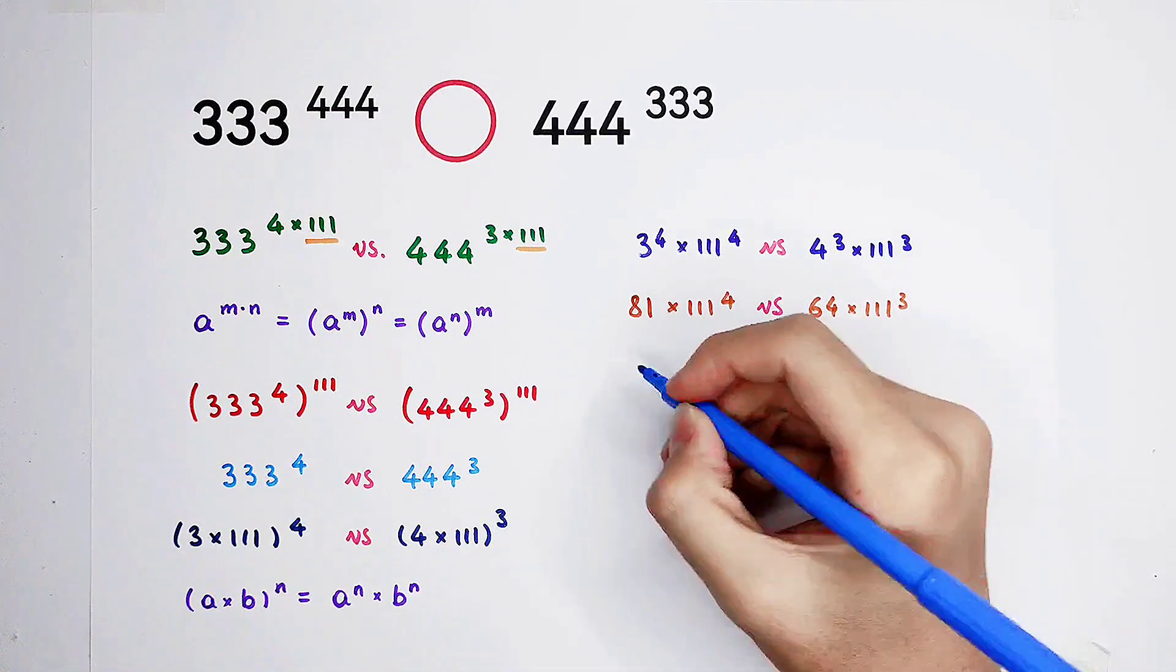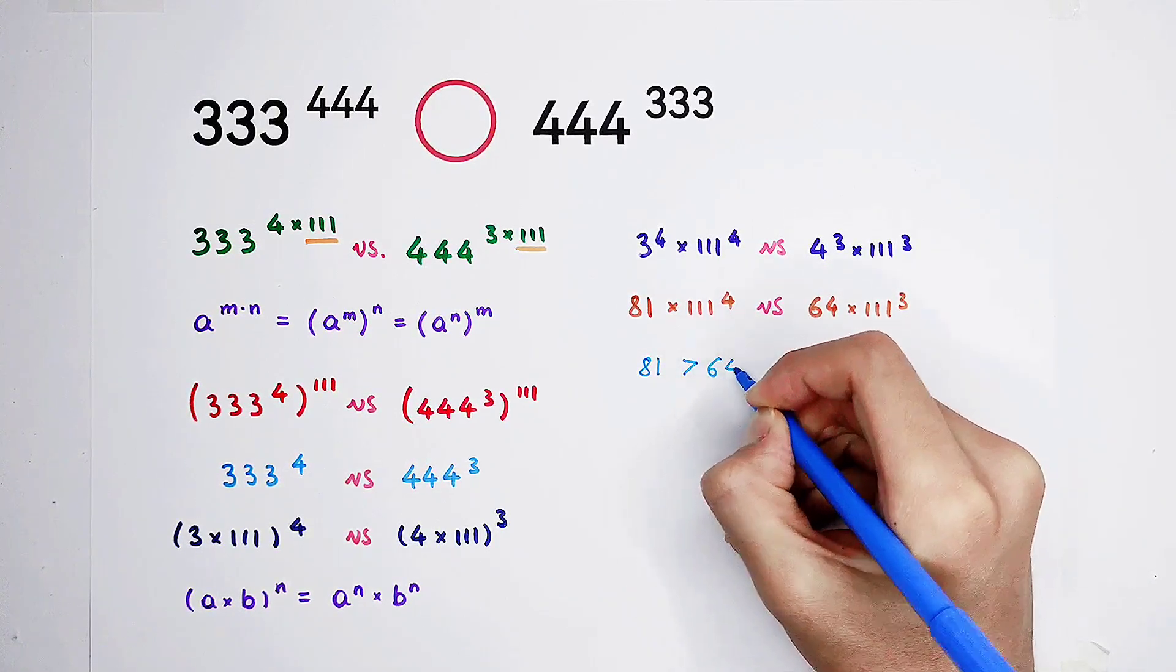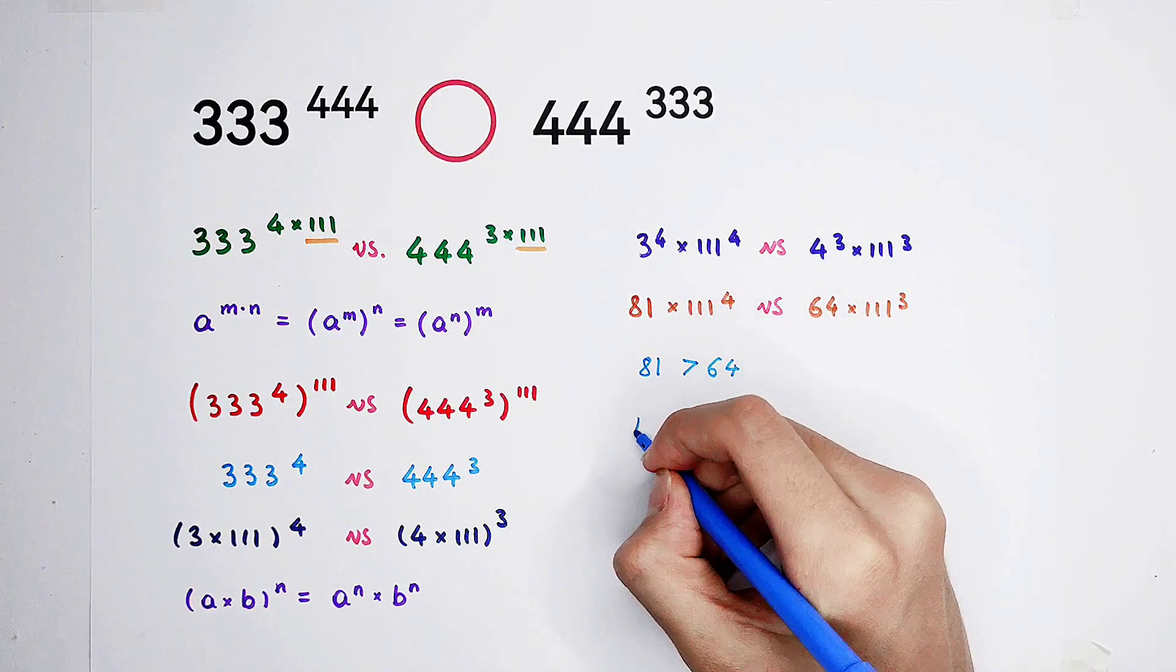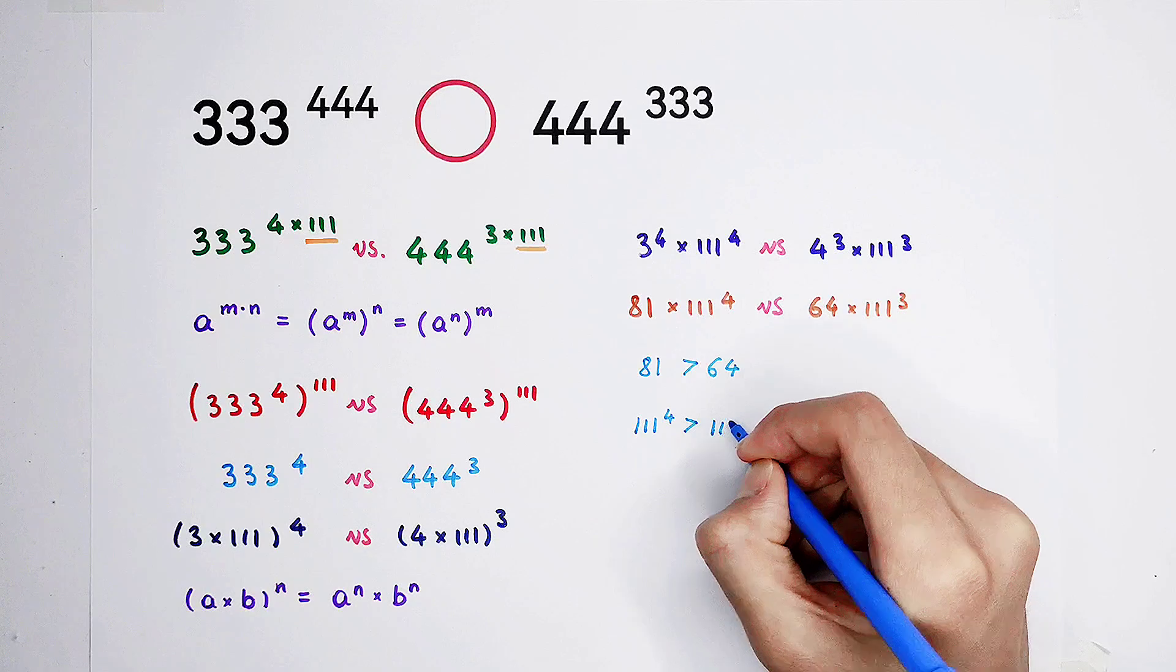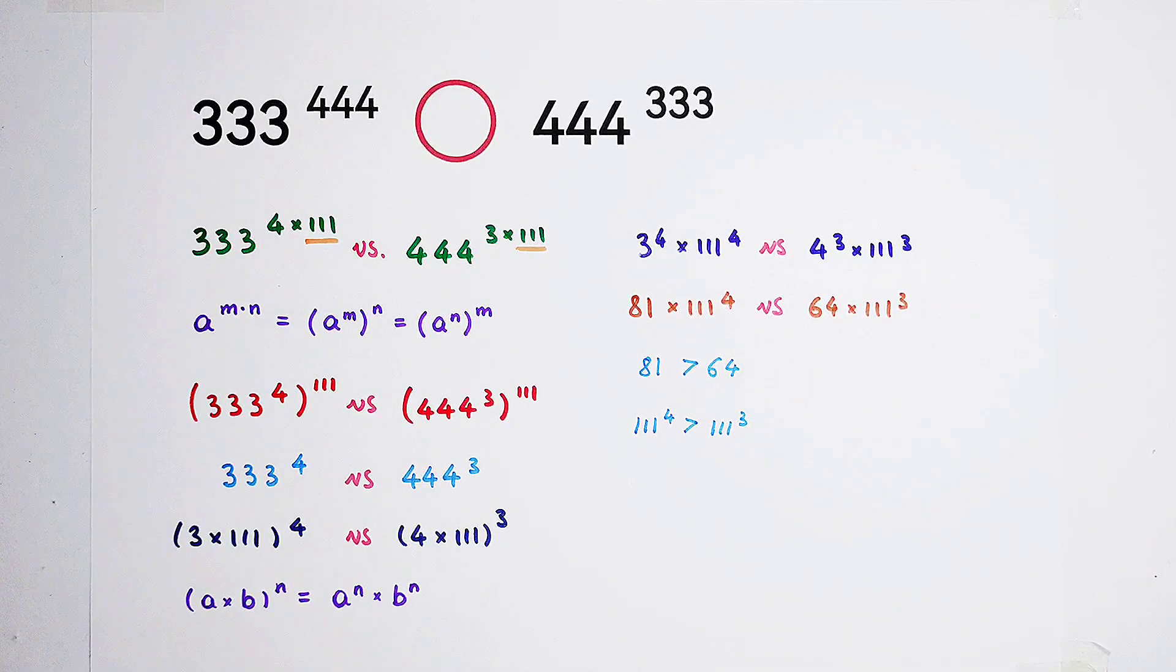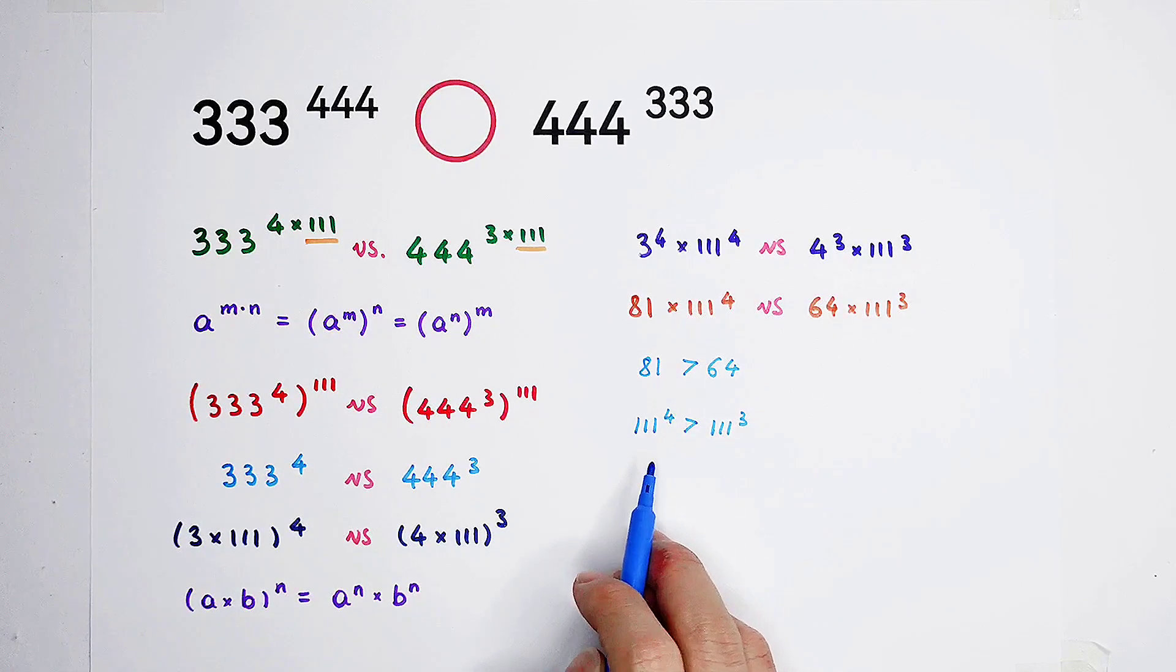Now, we can find out that 81 is, of course, greater than 64. And 111 to the power of 4 is also greater than 111 to the power of 3. Because the exponent 4 is greater than 3, and 111 is greater than 1.